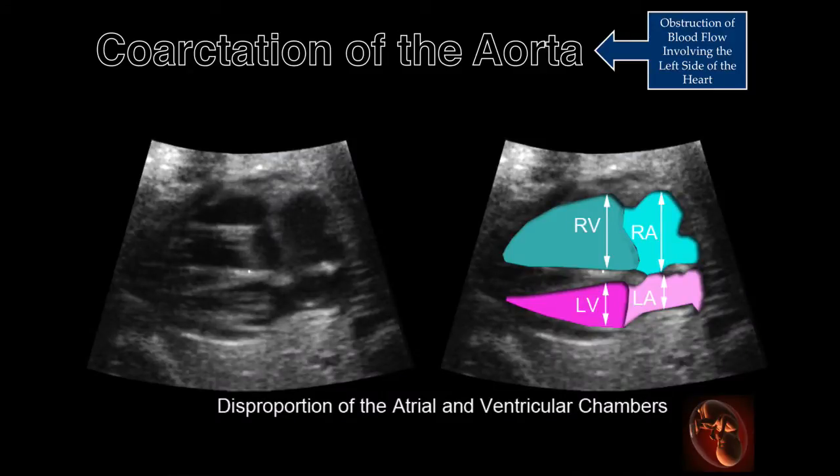This illustrates disproportion between the right and left atrial and ventricular chambers, with the right side larger than the left. Unless there is a significant ventricular septal defect, almost all fetuses destined to develop coarctation will demonstrate disproportion as shown in this image. Unfortunately, there are other etiologies that mimic coarctation when disproportion of the chambers is observed.